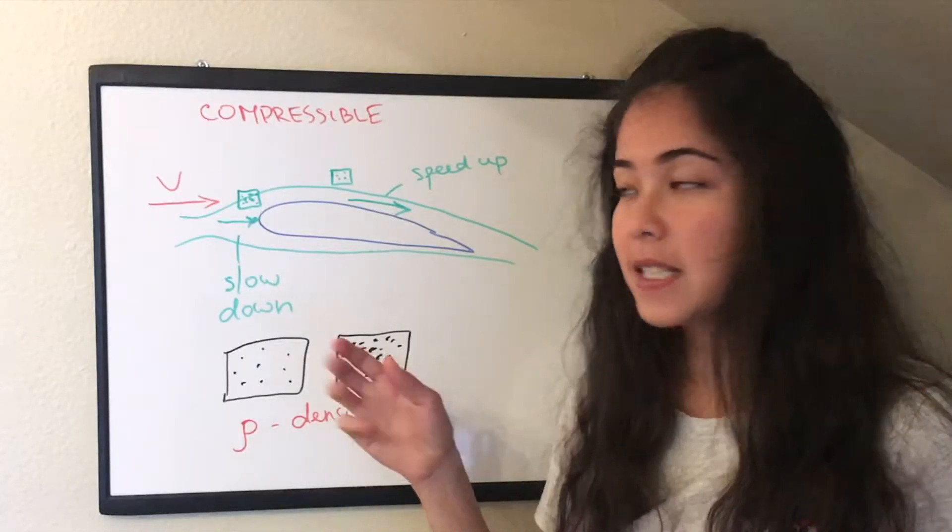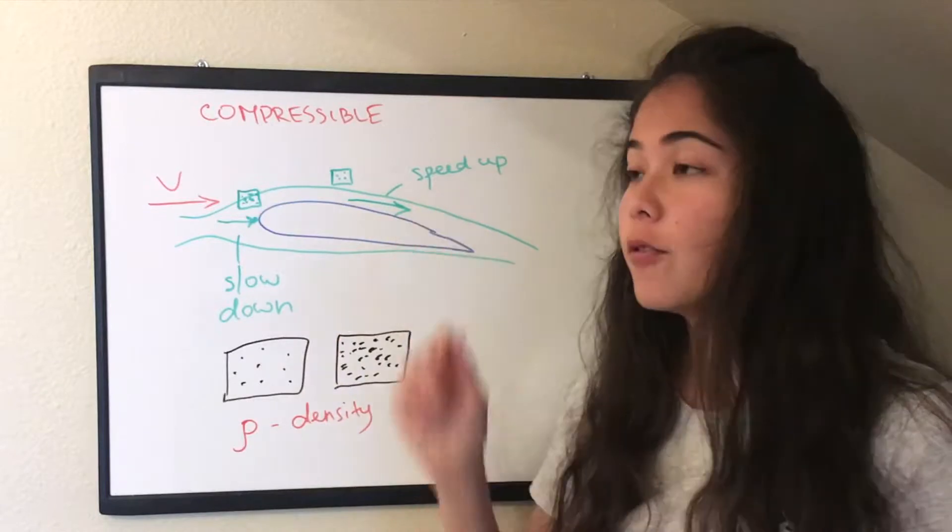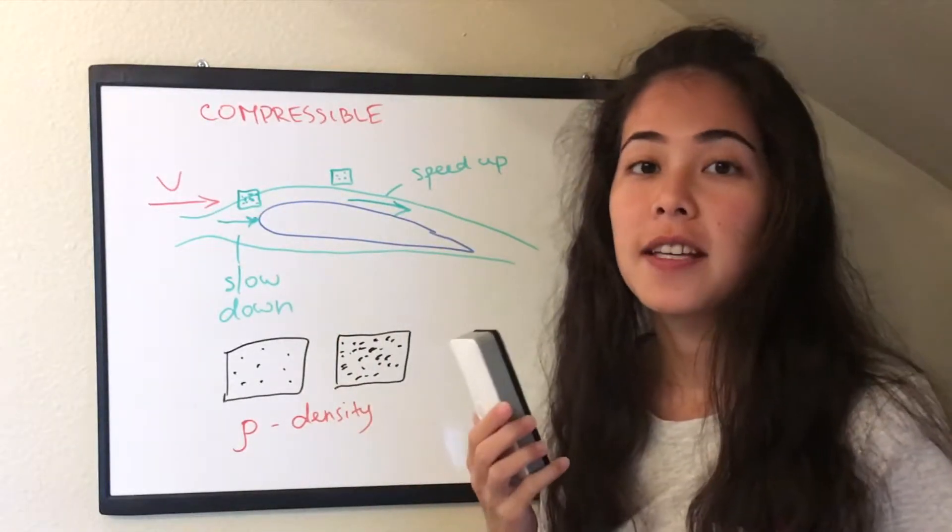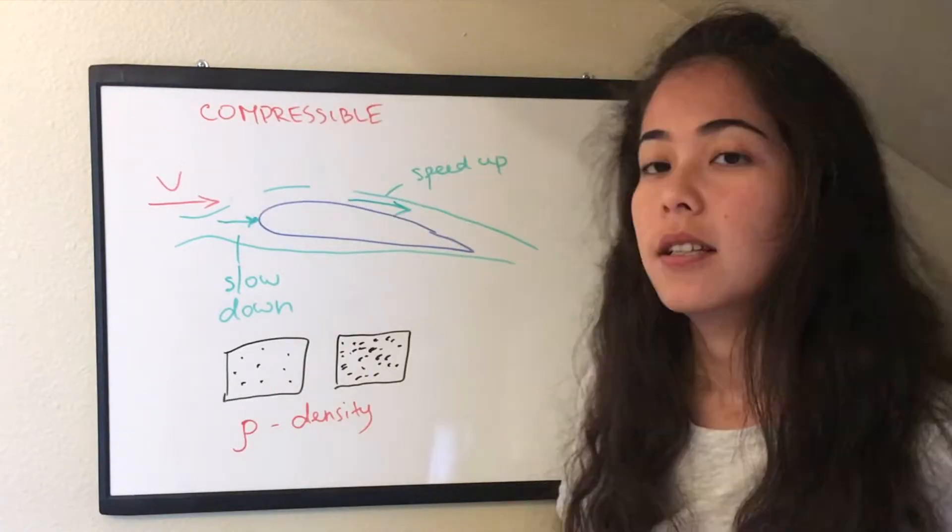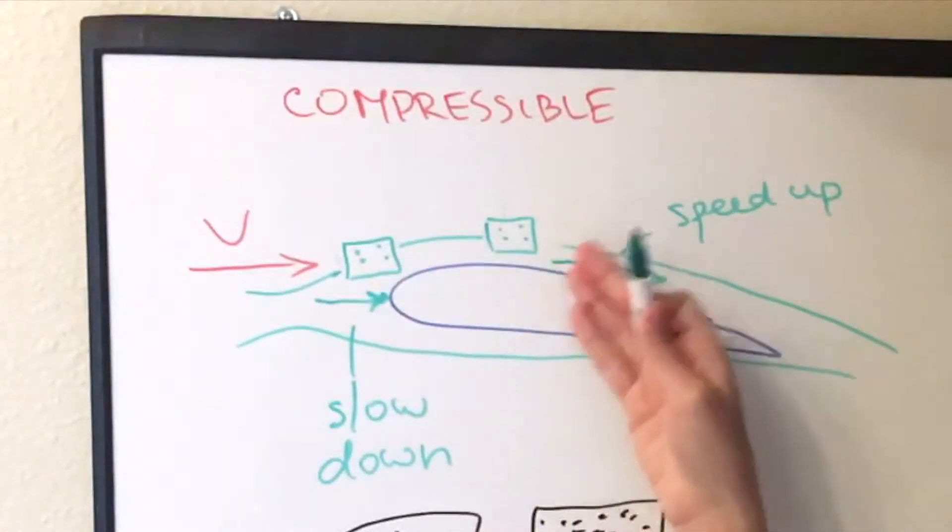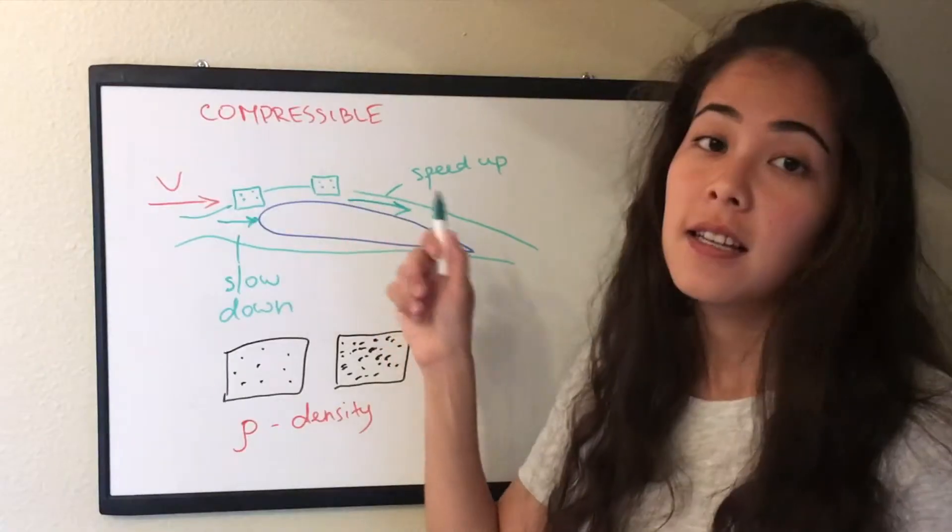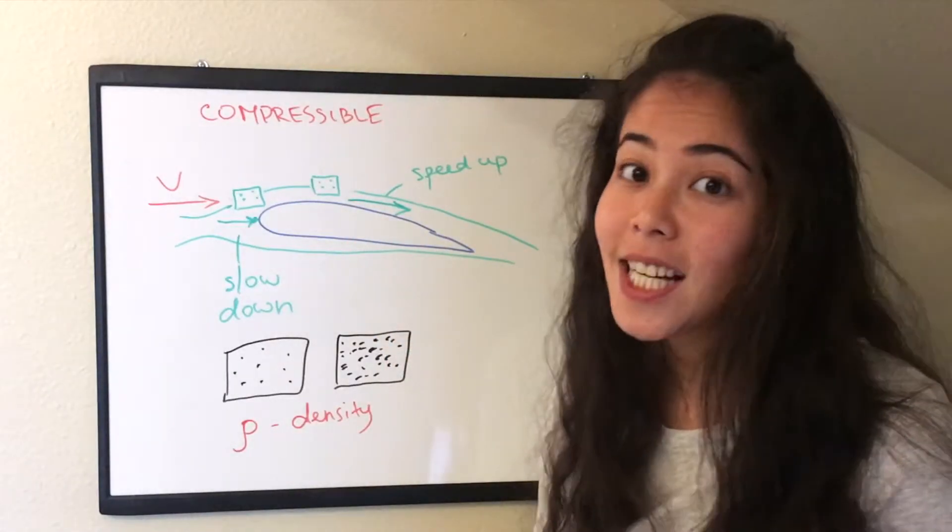But when the air has low speed, when it flows around the airfoil, it doesn't change its density significantly. So if there is no significant change in the properties, so we have the same air density, then that flow would be called incompressible.